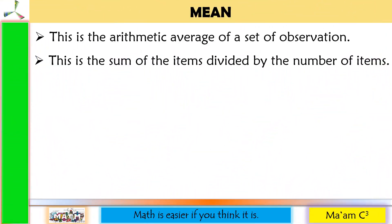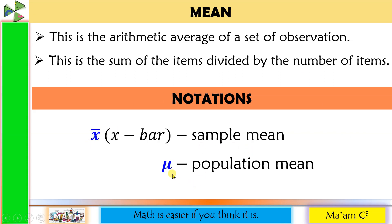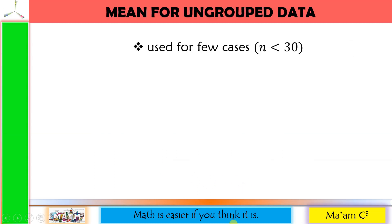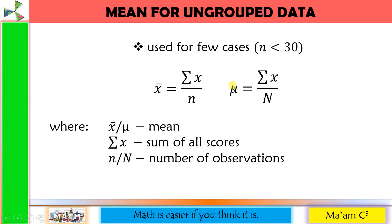Let's have the first one: the mean. This is the arithmetic average of a set of observations — the sum of the items divided by the number of items. The notation x-bar is used for sample mean, and mu for population mean. For ungrouped data (used for few cases where n is less than 30), the sample mean formula is x-bar equals summation of x over small n, and the population mean is mu equals summation of x over capital N, where summation of x is the sum of all scores and n or N is the number of observations.